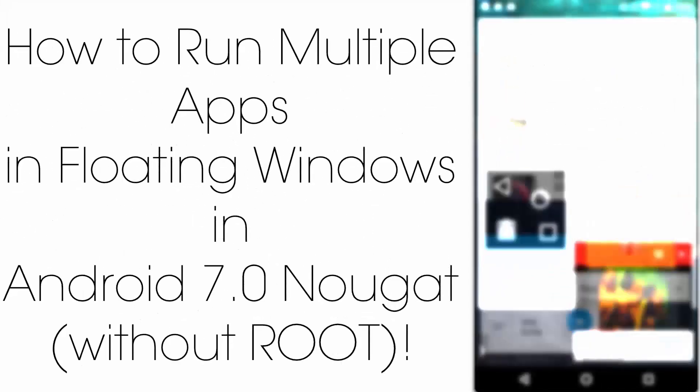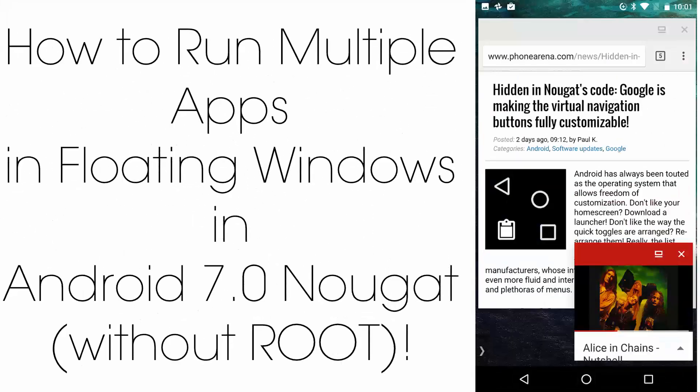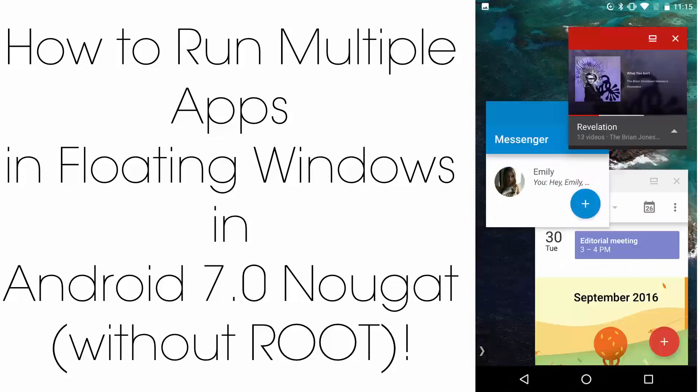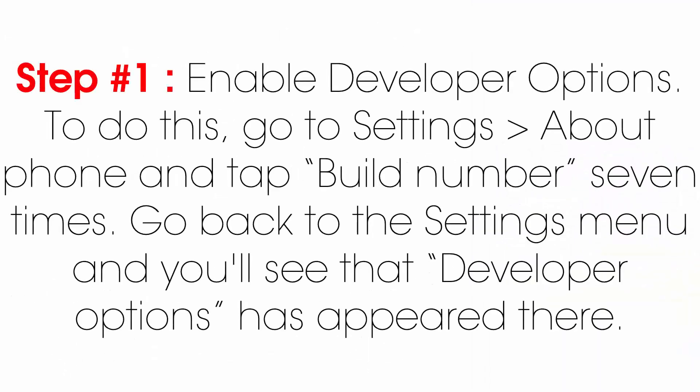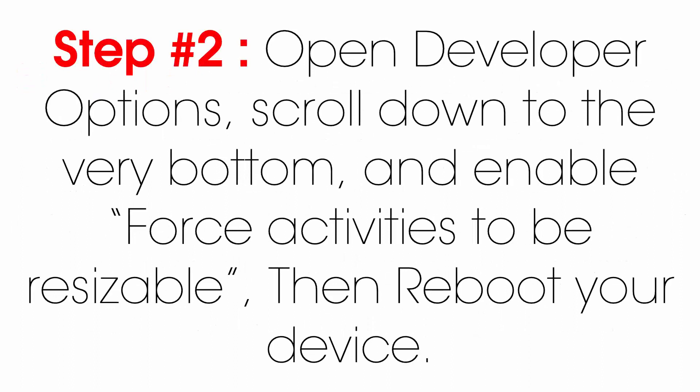How to run multiple apps in floating windows in Android 7.0 Nougat without root. Step one: enable developer options. To do this, go to Settings, then About Phone, and tap Build Number seven times. Go back to the Settings menu and you'll see that Developer Options has appeared.